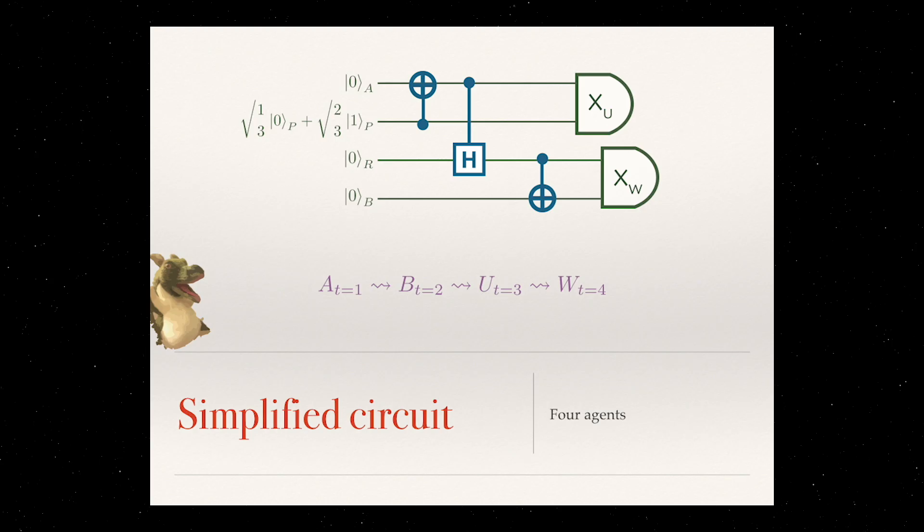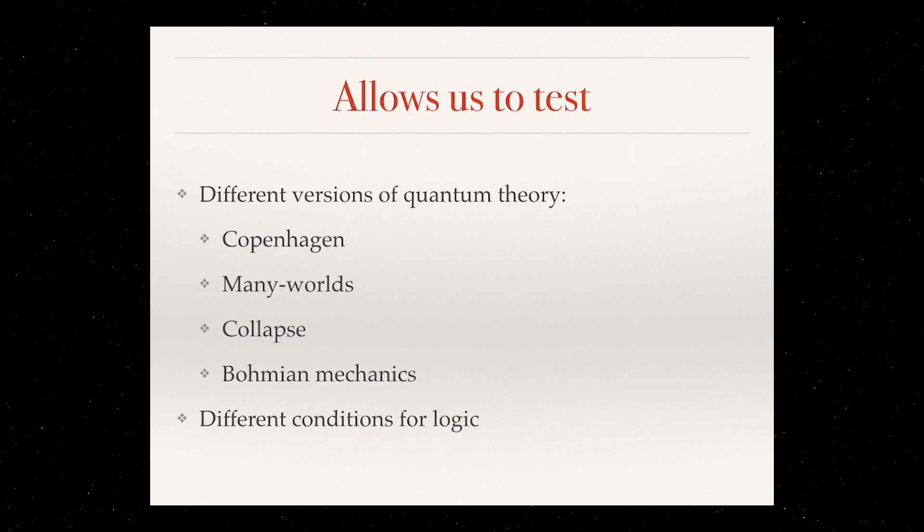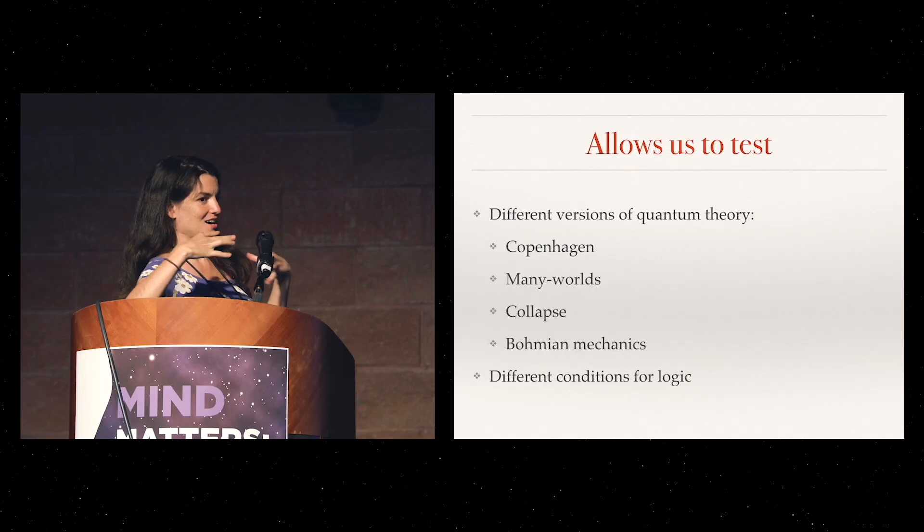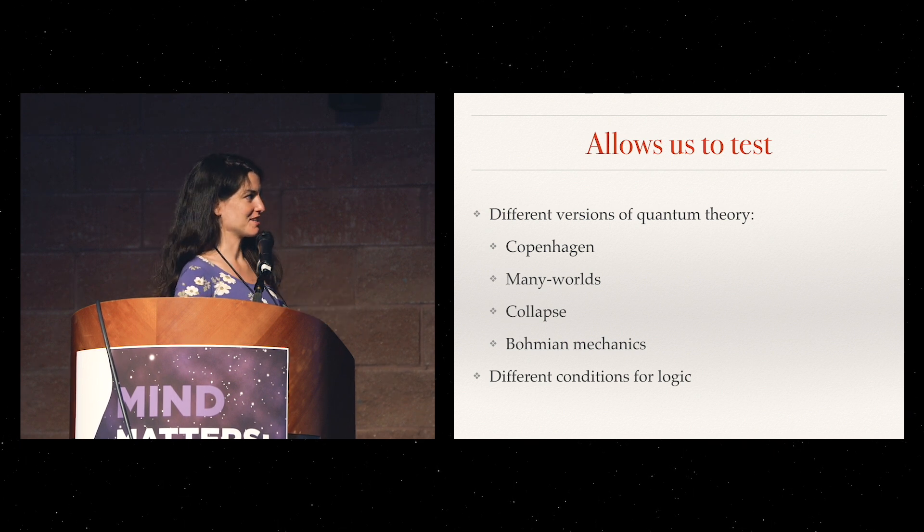The other things we can test are different conditions for logic. This means maybe we should not be able to change statements like this. Maybe there's some condition for why Bob at this point in time should not be able to make any statement about Alice's reasoning five seconds ago. But then we need to, the challenge then is to try to come up with a consistent set of rules that also passes a test when applied to more simple scenarios.